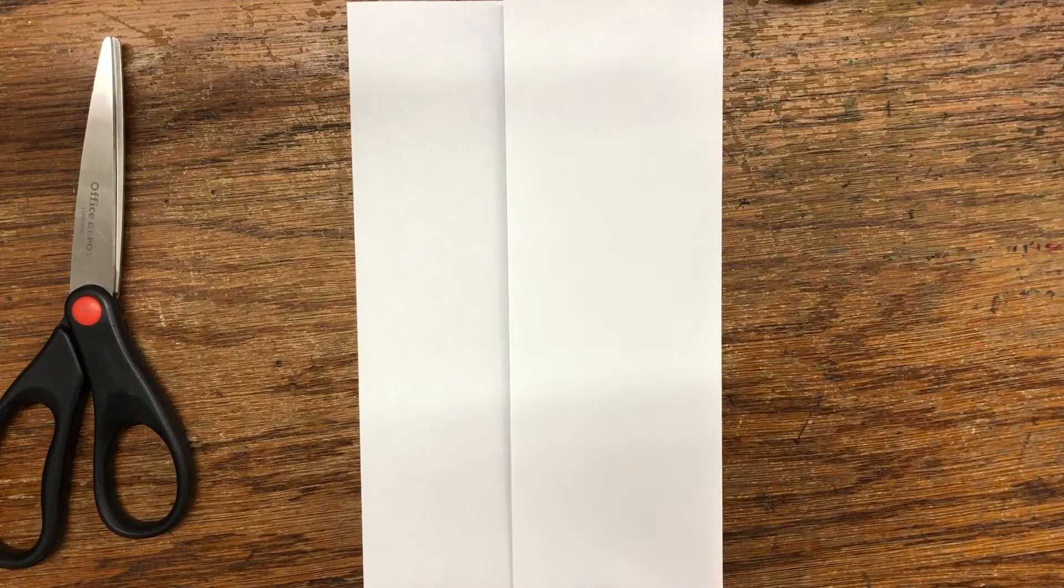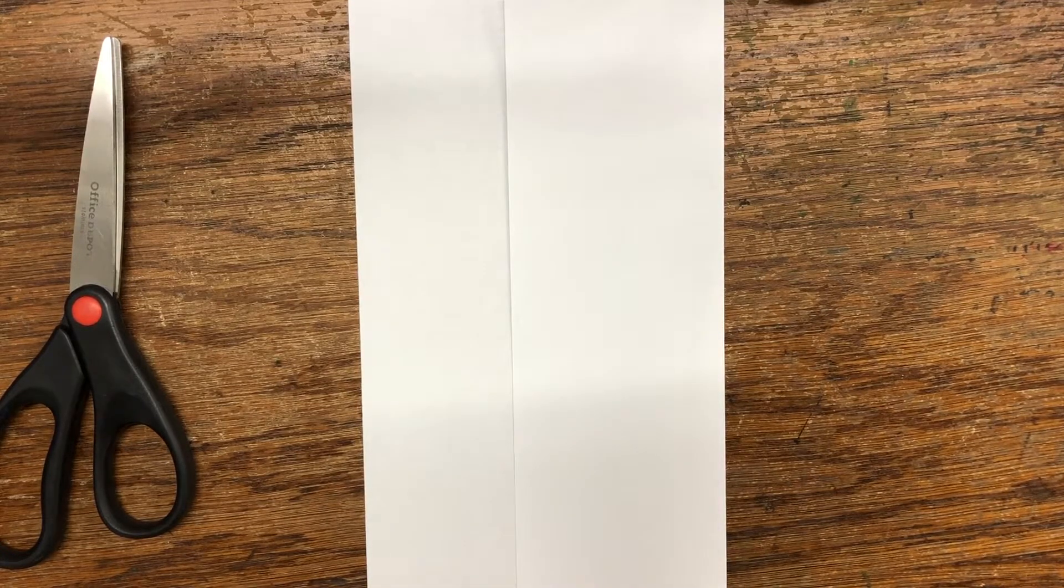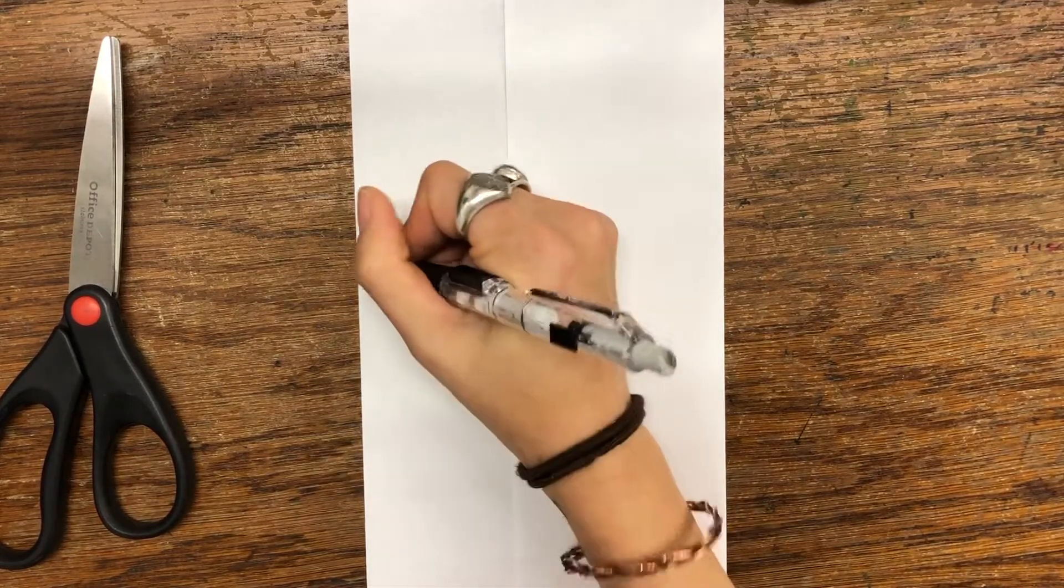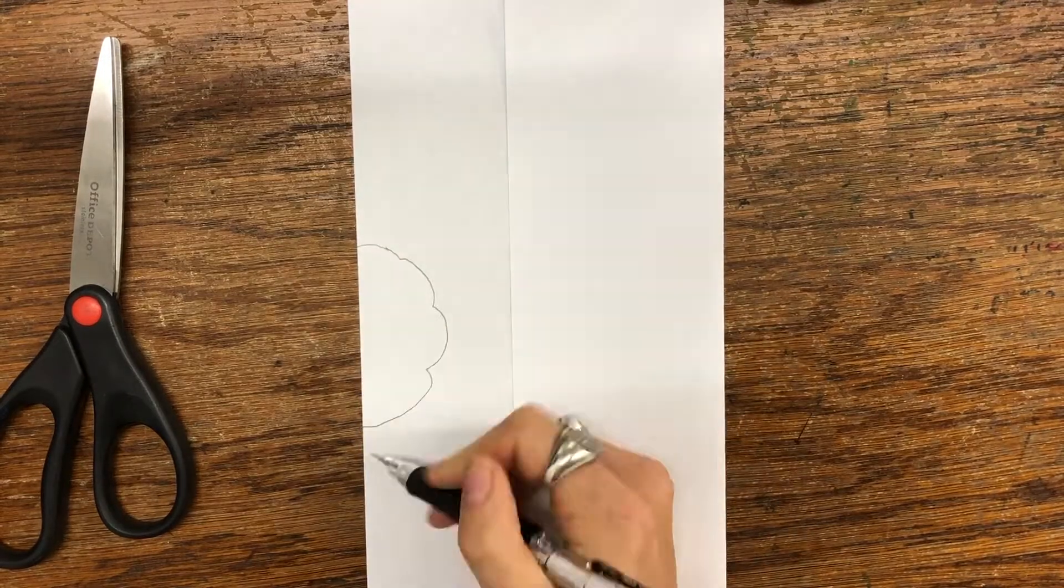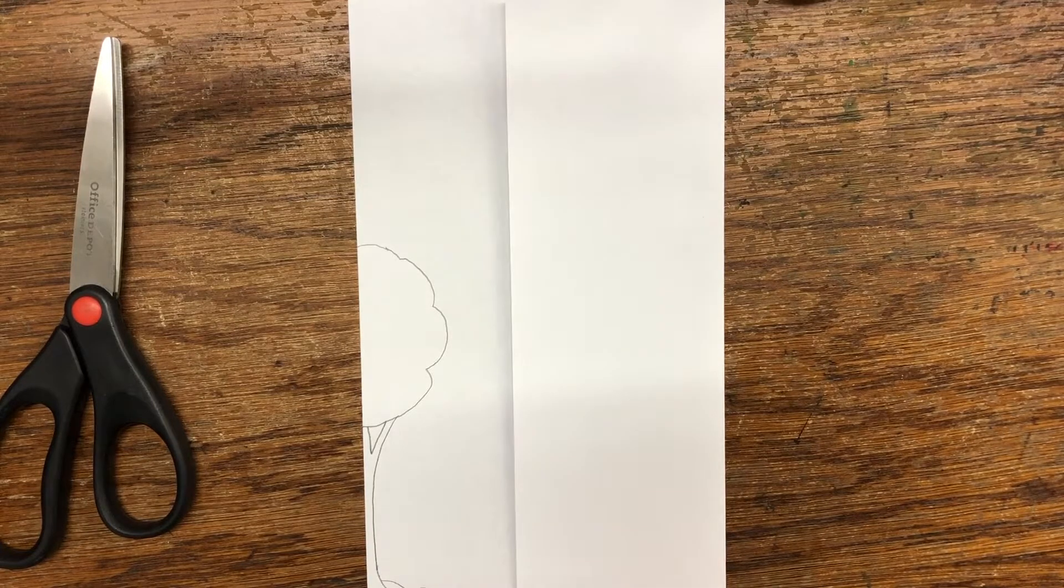When you begin this design you can start with the image that covers both the flap top and the piece behind it. This way it looks cohesive. Mine is going to be a nature scene. So I begin quickly drawing a tree and outside objects.